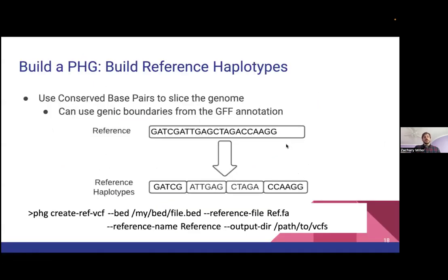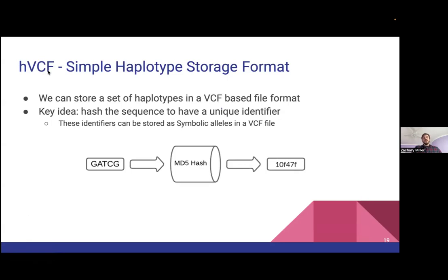The next step is our alignment step — this is where AnchorWave comes in. But one step before that: we need to cut up our reference. We have a reference sequence and we apply that BED file to slice it into little sub-sequences. That's done by running one command. The output is a file we call HVCF — it's actually a VCF file in which we store haplotype information. The key is we use the sequence itself to become an ID, which then becomes a symbolic allele in a normal VCF file. So this will work with a lot of existing VCF tools without any changes.